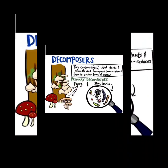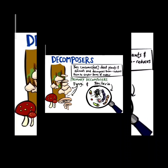Some microorganisms like certain bacteria and fungi decompose the organic matter present in dead plants, dead animals and animal waste, and convert them into simple substances which mix with the soil. These simple substances contain plant nutrients which are again used by new plants for their growth. Microorganisms which decompose the dead remains of plants and animals into harmless materials are known as decomposers, and hence they clean the environment and help in recycling nutrients in nature.